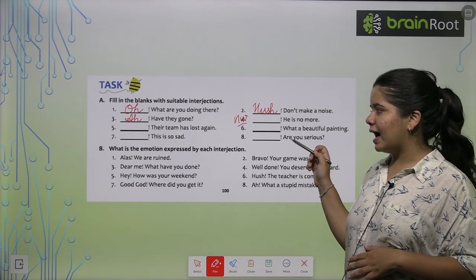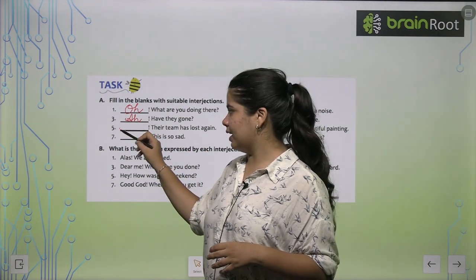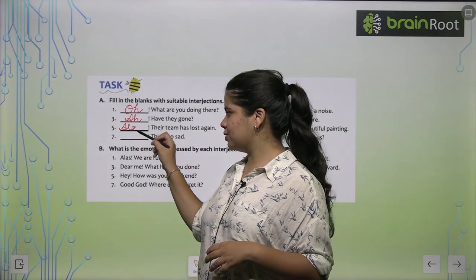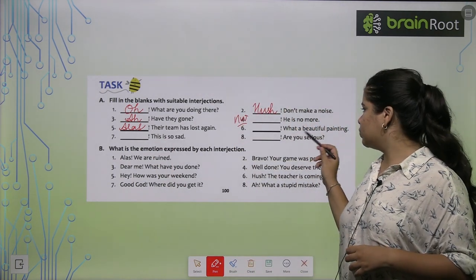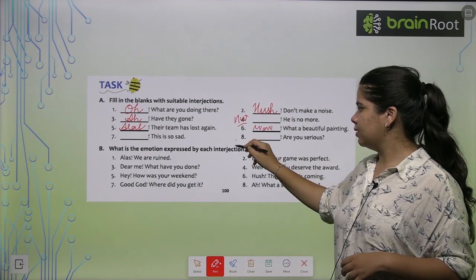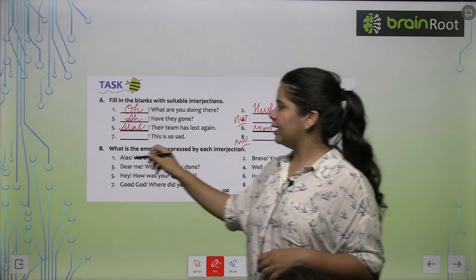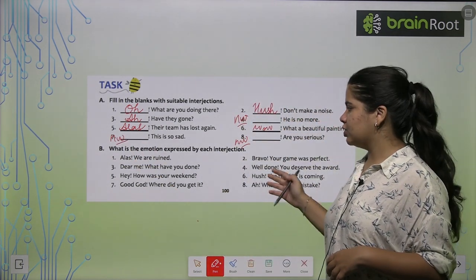Next, fifth: Dash, their team has lost again. Alas, their team has lost again. So you also use alas to express your sorrow. Sixth: Dash, what a beautiful painting. Wow, what a beautiful painting. And again, the last two, the seventh and eighth, are your homework. You will try these yourself.